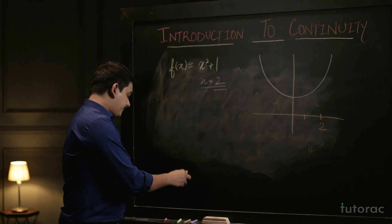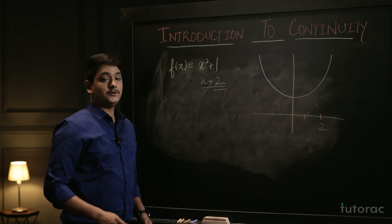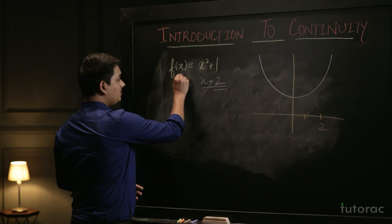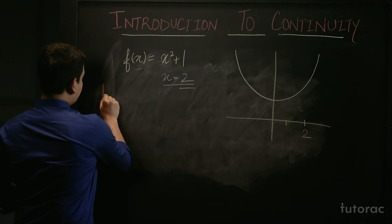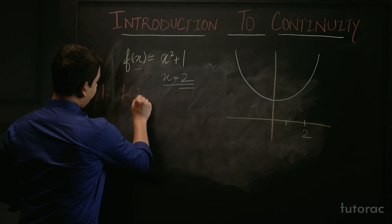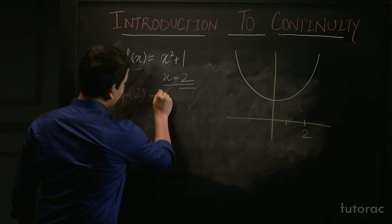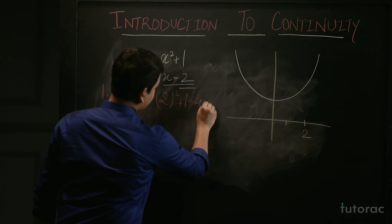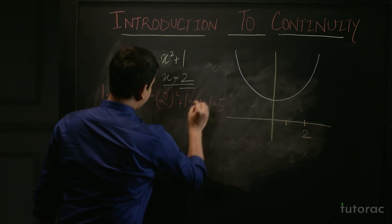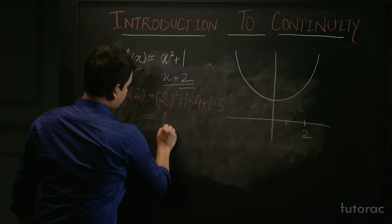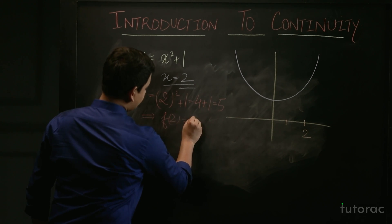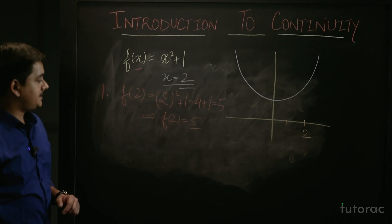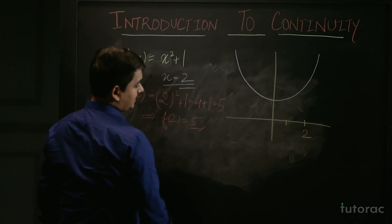The first condition is that the value of the function should exist at that point, meaning f(2) should exist. If we find f(2), it equals 2² + 1 = 4 + 1 = 5. So f(2) = 5, and the value of the function exists since 5 is a real number.